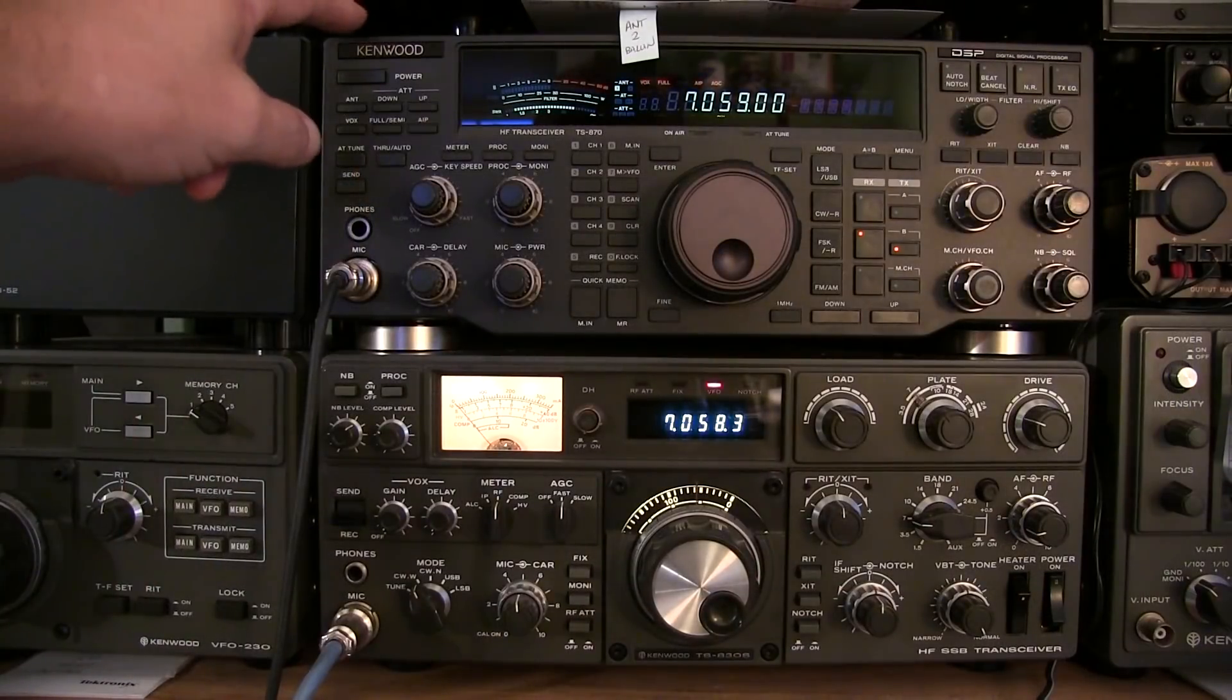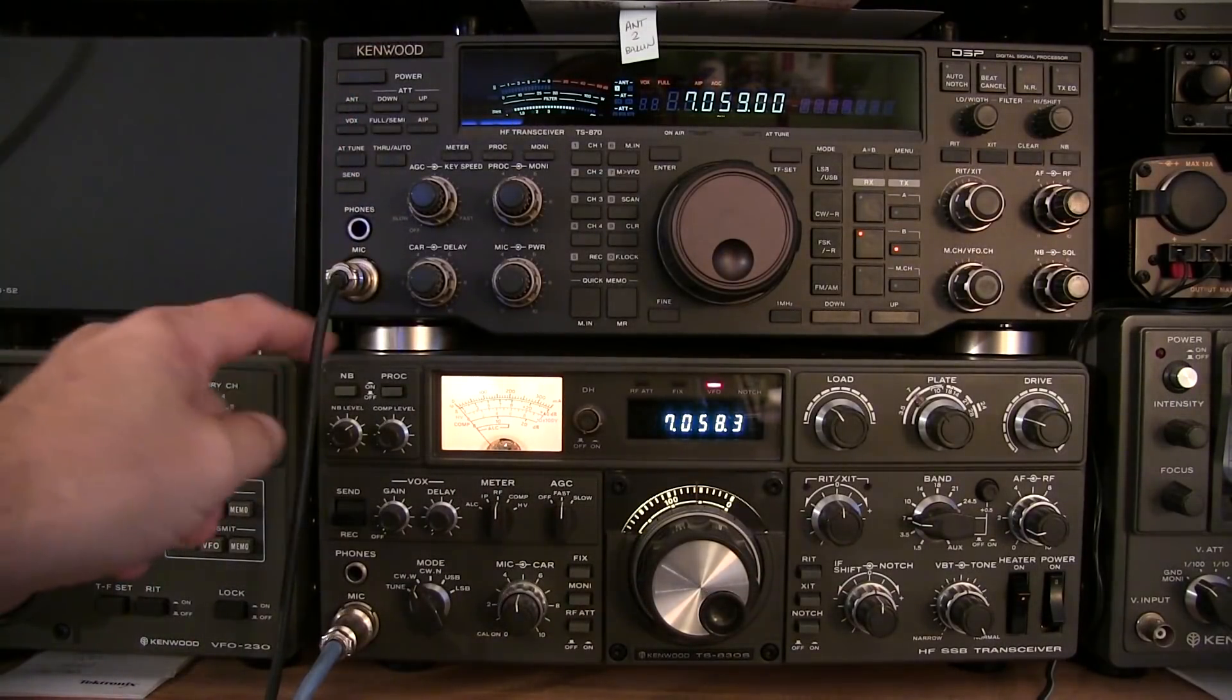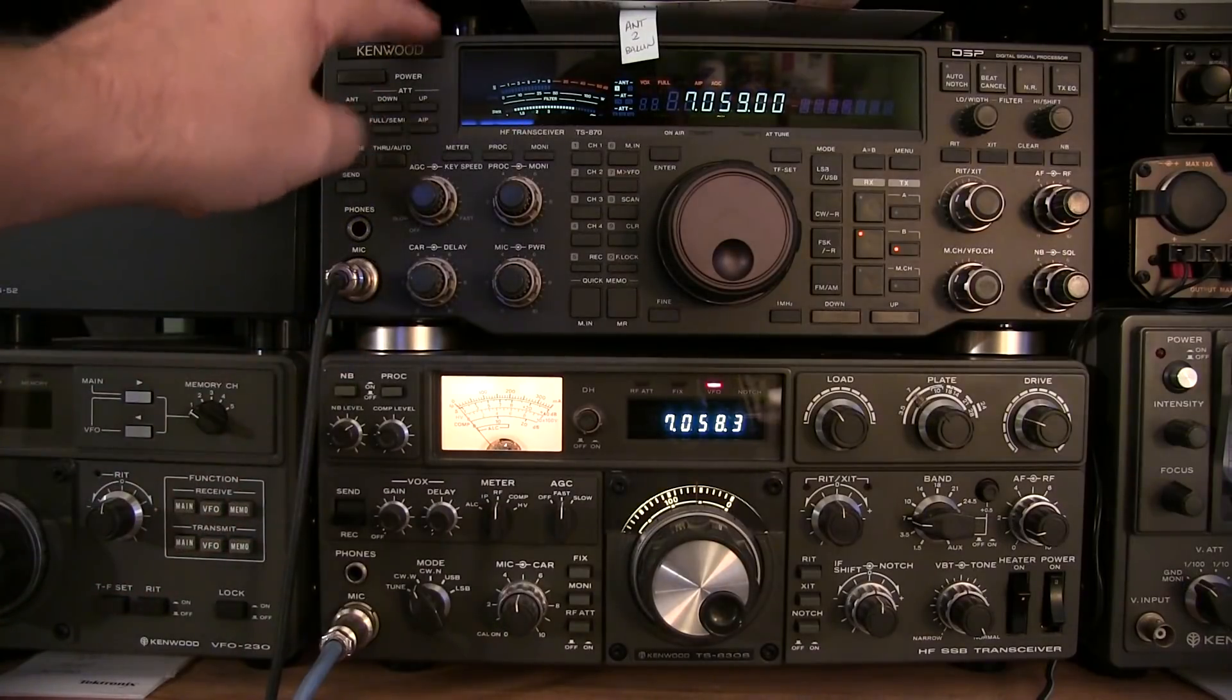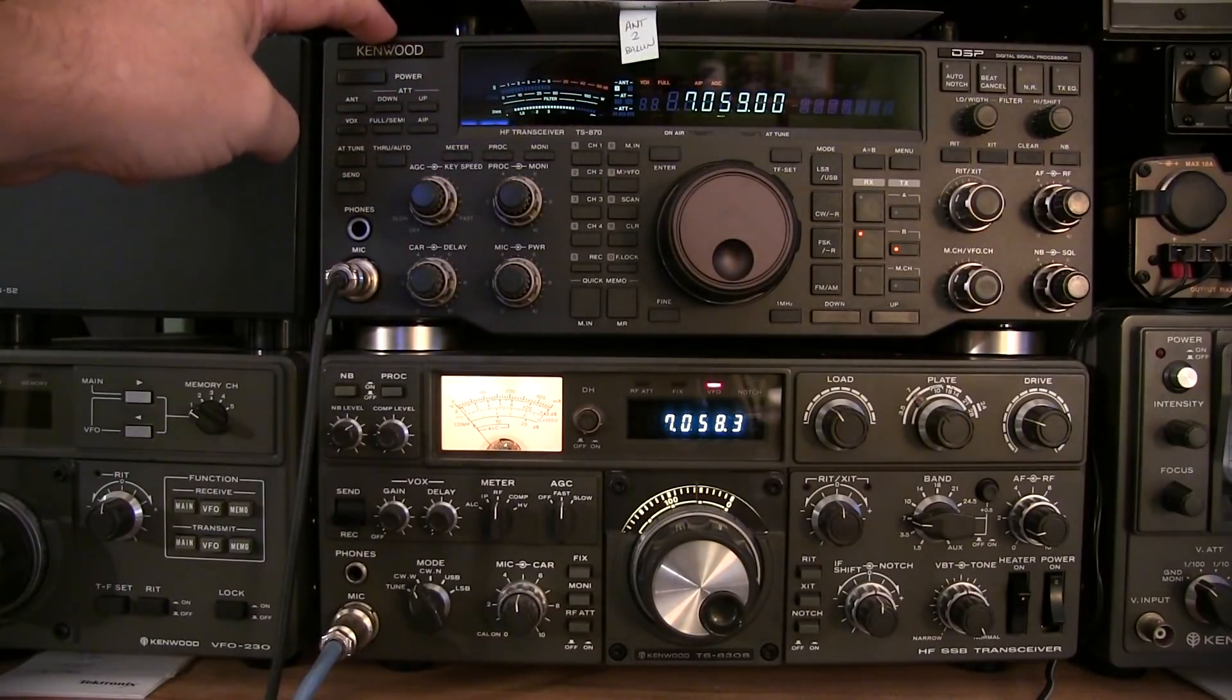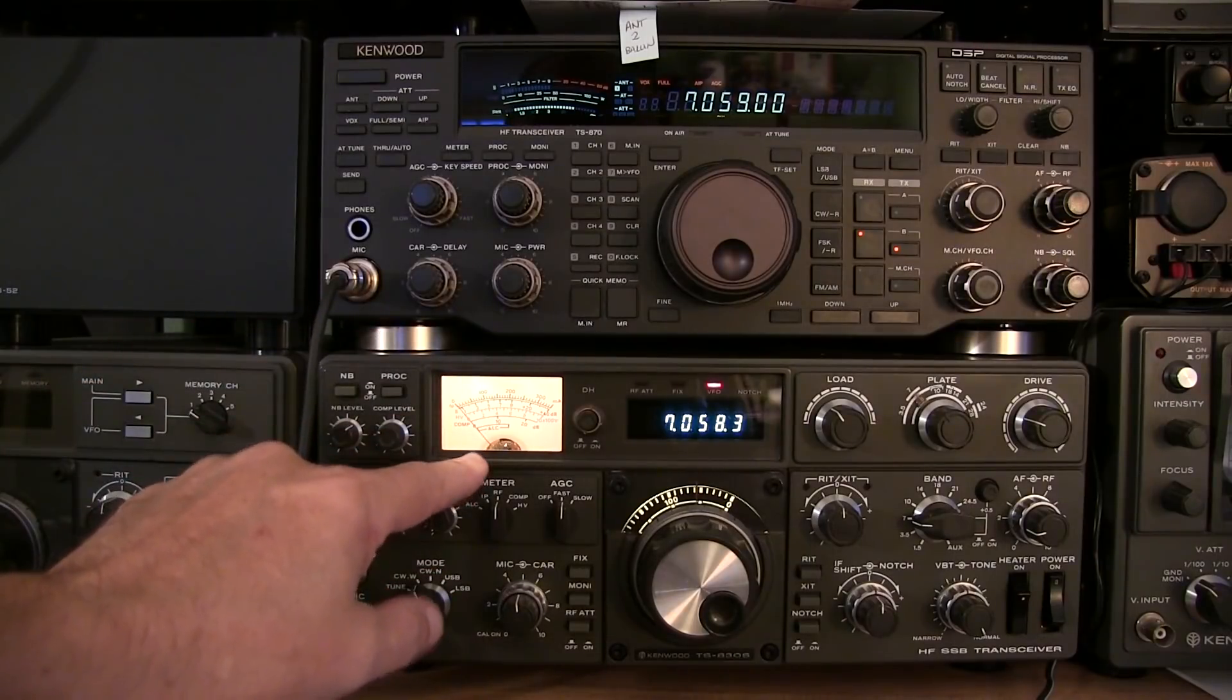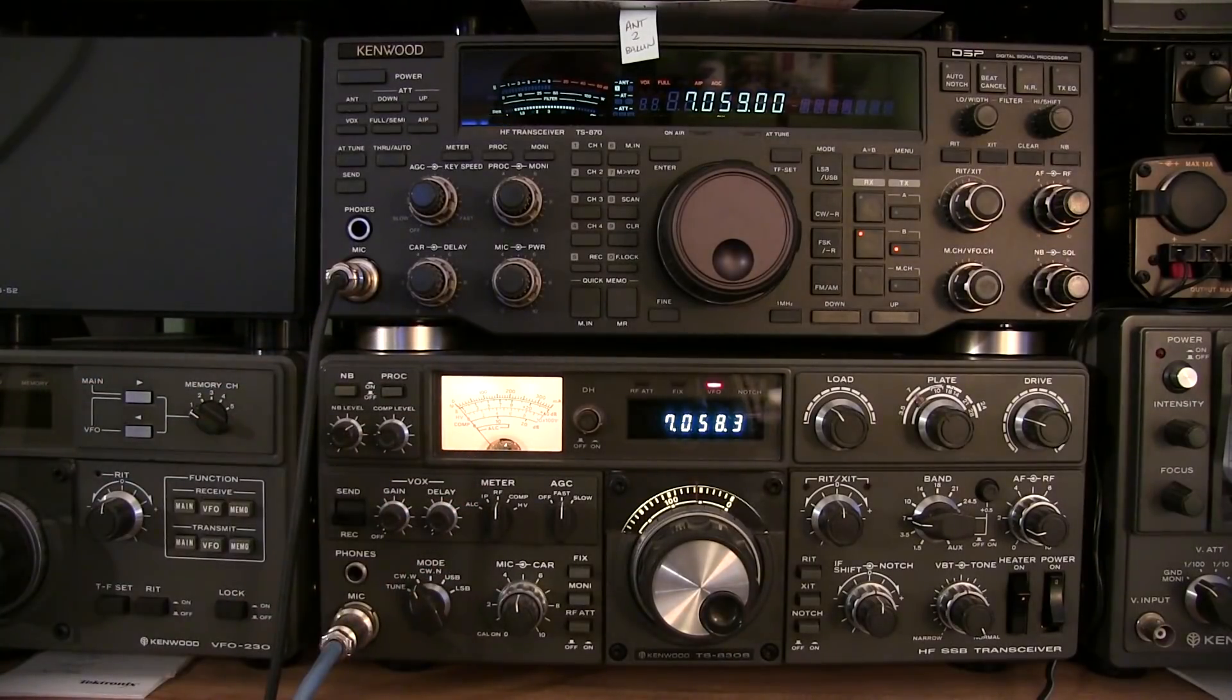Okay, so I have the coax switch set up to put the 870 into the dummy load and the 830 is switched out of line. So we're going to transmit 100 watts out of the 870 on the 40 meter CW portion of the band into the dummy load and see how much power gets into and read by the S meter on the 830.